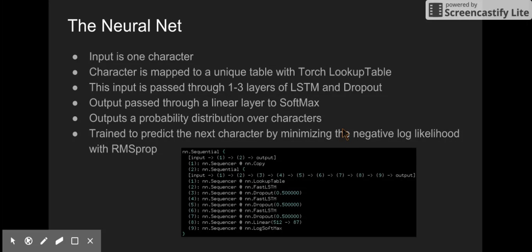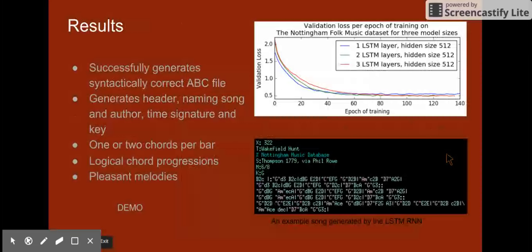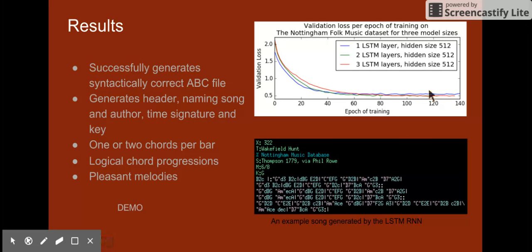I train it by minimizing the negative log likelihood of predicting the correct next character, using RMSProp — a form of gradient descent. This is a graph of the validation loss per epoch of training on the dataset. I tried three different model sizes with one, two, and three layers. Adding a second layer made the model perform much better than a single layer, but three layers didn't improve much beyond two layers. The best validation loss was around 0.5.